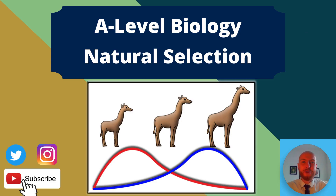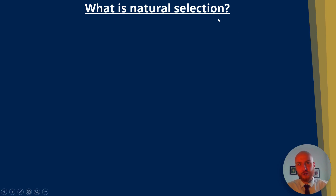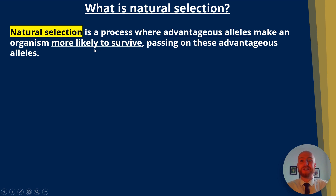Let's talk about AQA A-level biology natural selection. Natural selection is a process where advantageous alleles make an organism more likely to survive, and that means the organism will pass on these advantageous alleles.